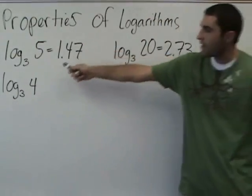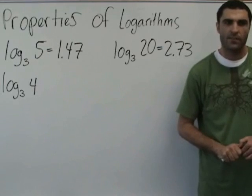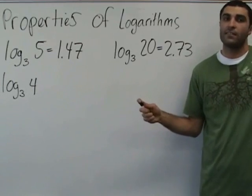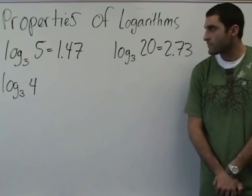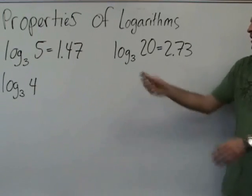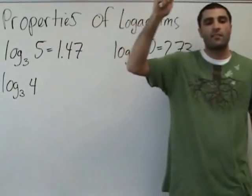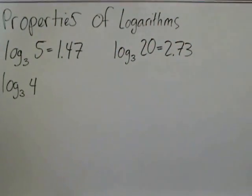So you basically have to search for how to recreate this 4 using 5 and or 20. Any guesses off the bat? Can't you just subtract 1.47 from 2.73? That wouldn't work. That would just be log base 3 of 20 minus log base 3 of 5, which is 20 divided by 5. Are we allowed to multiply here? Yeah. 5 times 5, 3 times, and then 125.